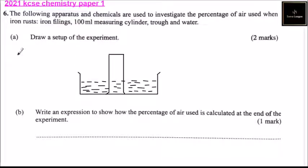Then you can put your iron filings here. These are your iron filings. So what to happen here is that during the rusting, oxygen will be used. So it will draw water into the measuring cylinder.